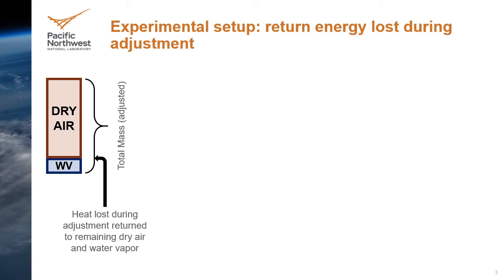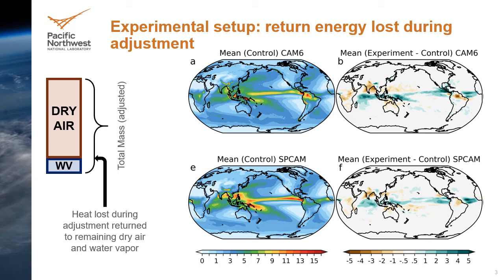We focus on the hydrologic cycle and find the differences in simulated rainfall to be profound. We have tested this experimental adjustment procedure both on the default CAM-6 as well as SPCAM, a version of CAM where the deep convective parameterization is replaced by individual cloud resolving models in each GCM grid cell. Despite CAM-6 and SPCAM having large differences in their control climatological rainfall amounts, their responses to the experiment are nearly the same, as shown on the right. Rainfall increases over the equatorial ocean and decreases over tropical and subtropical land regions.